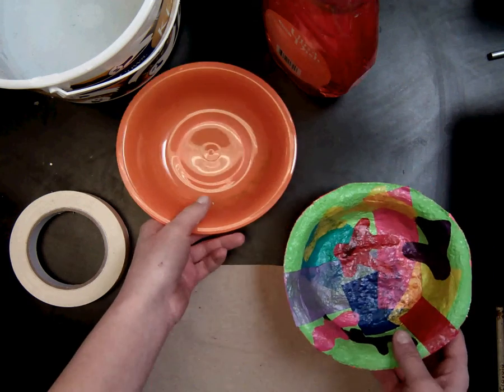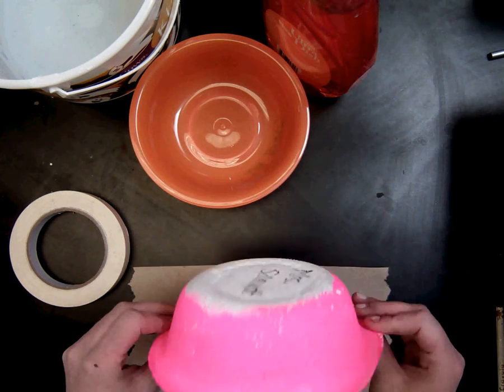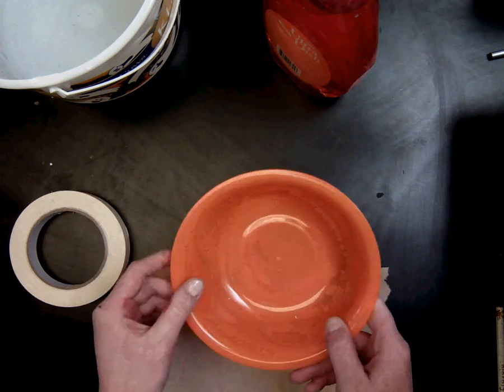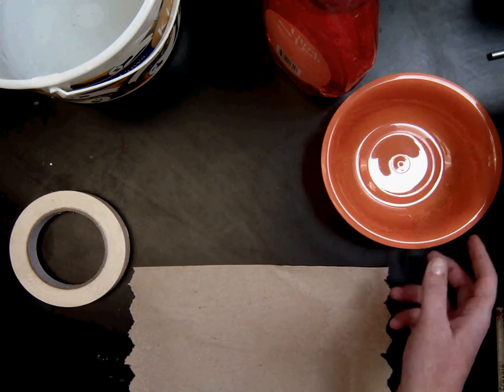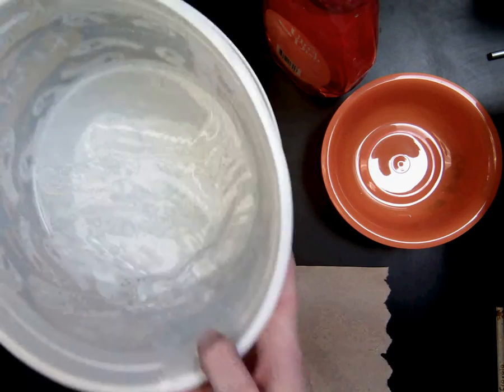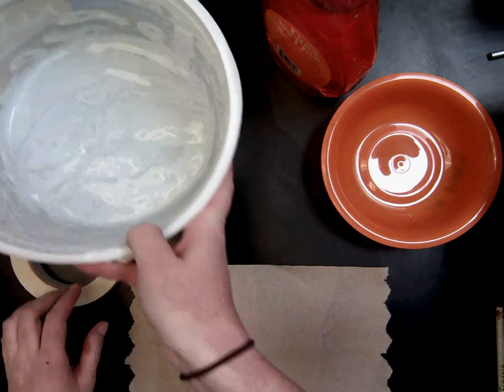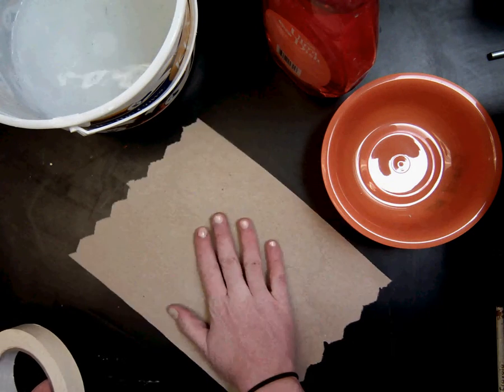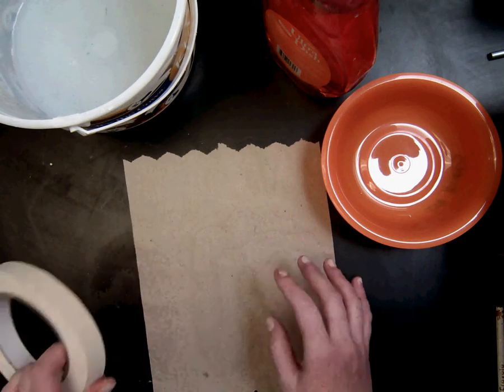Today we are going to make our Henry Matisse Plaster Bowls. We will be using a plastic bowl as a mold. We'll be using plaster gauze. At your table you have a bucket of water, and then we'll be using tissue paper or a paper towel and tape.